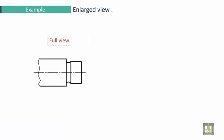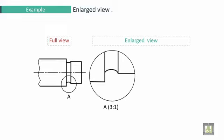Let's take an example. This is the full view. We want to show the detail here. We name it A and make enlarged view with a new scale 3:1.